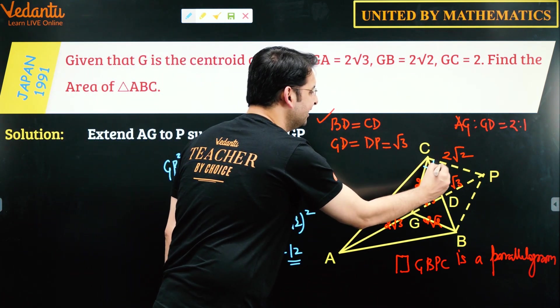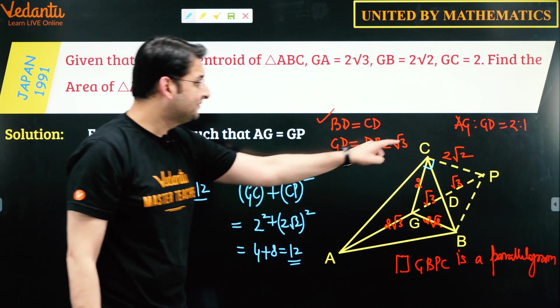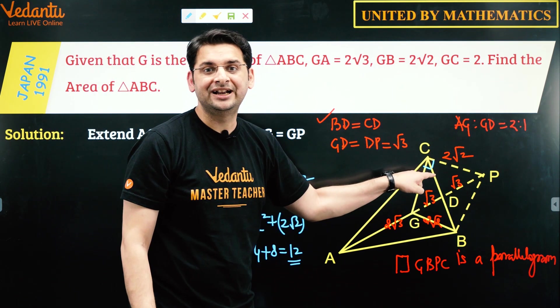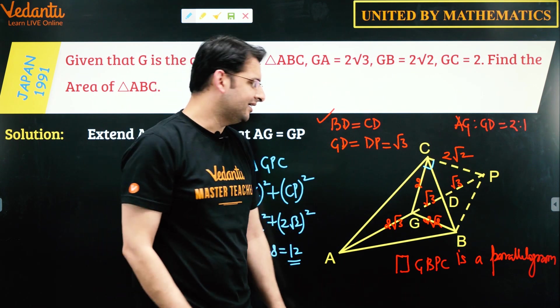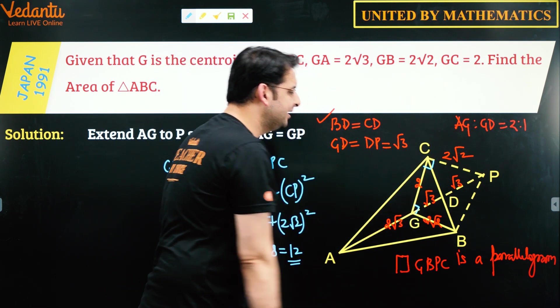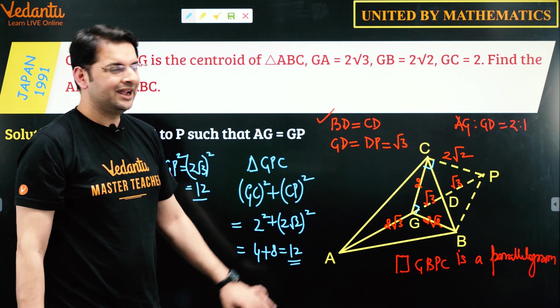Clearly this is a right angle triangle, and if this is a parallelogram whose one angle is 90 degrees, that means this parallelogram is actually a rectangle and hence this would also be 90 degrees.